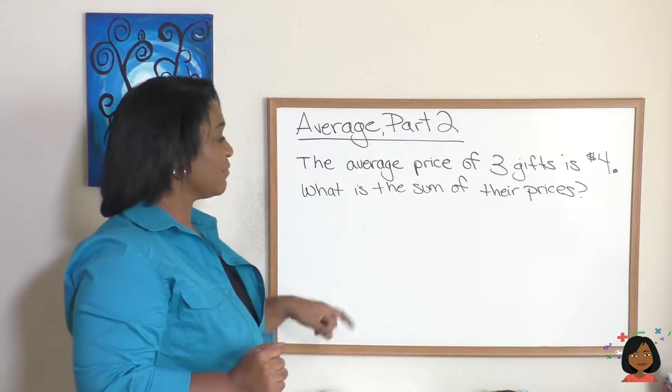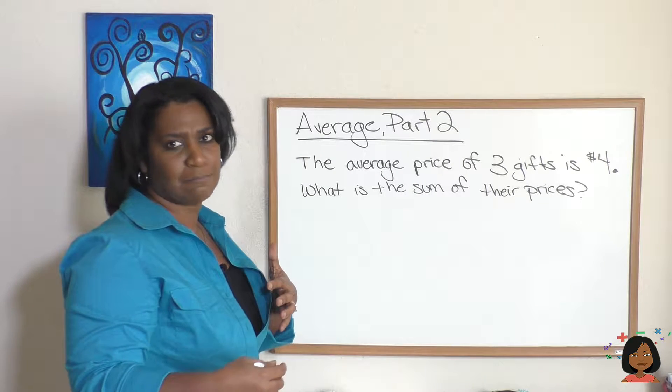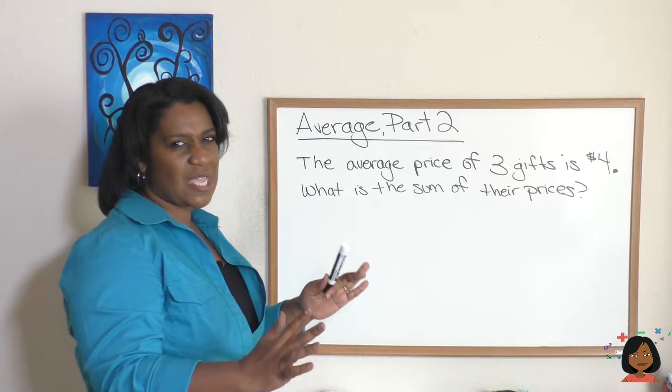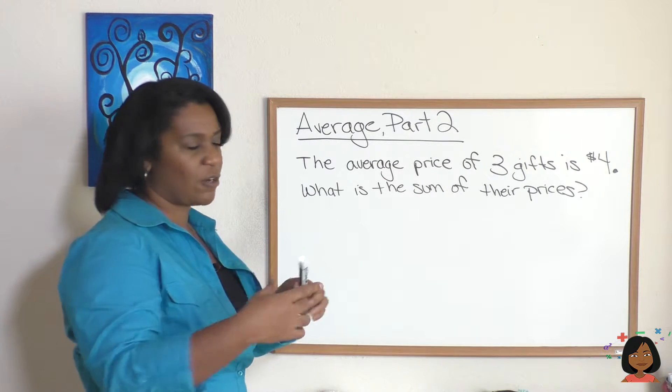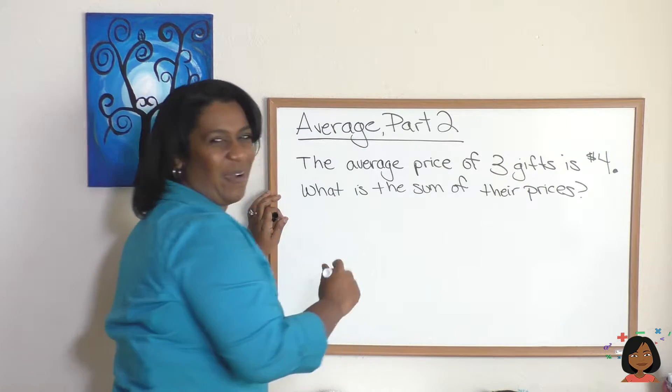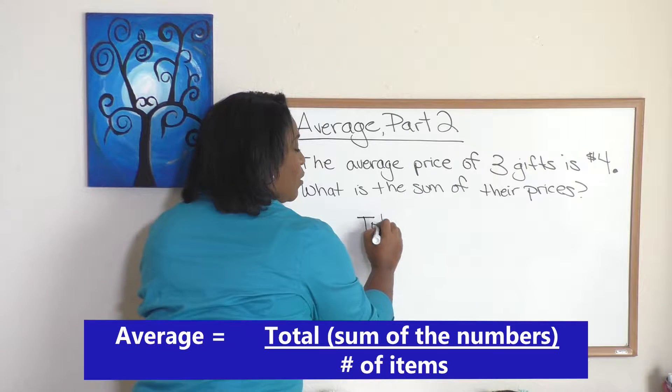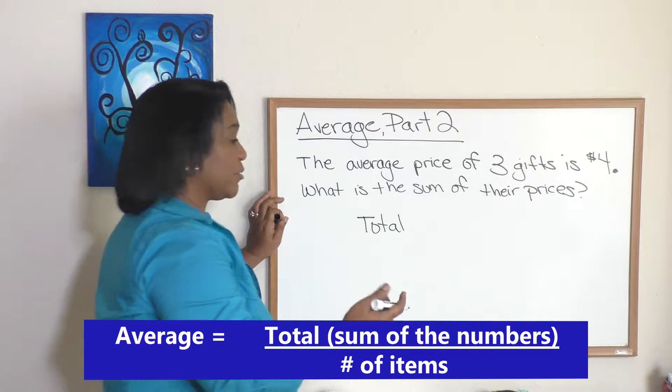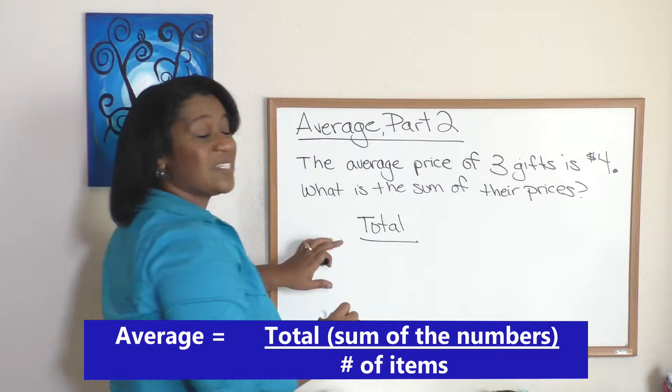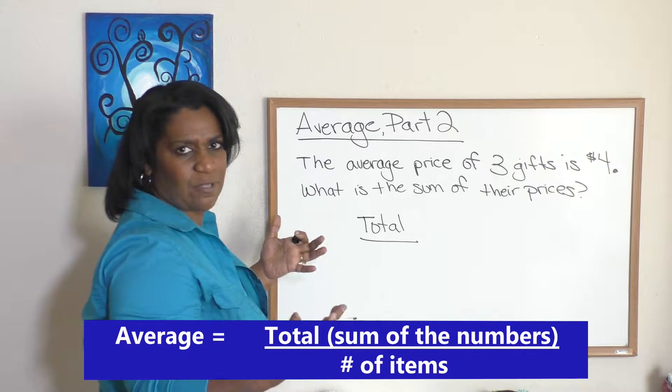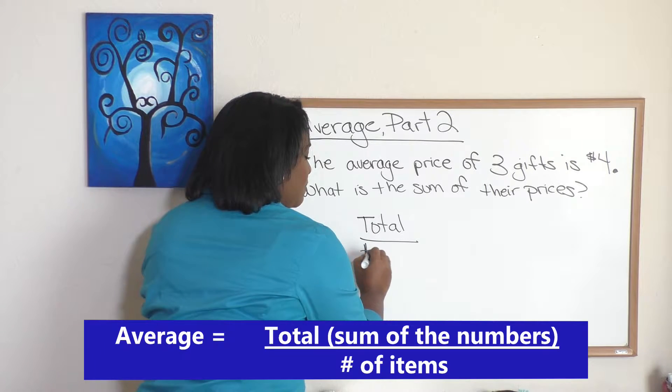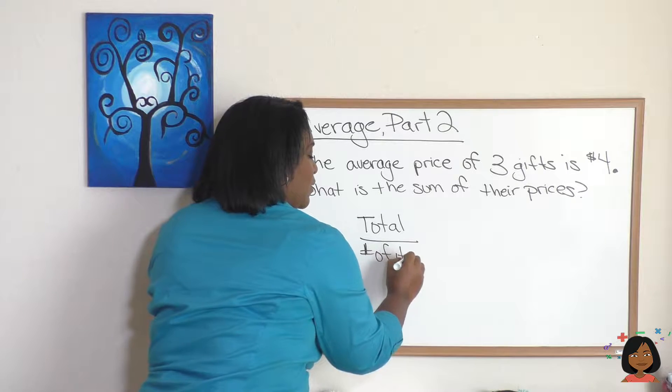The average price of three gifts is four dollars. What is the sum of their prices? Well, let's first think about what is that formula or equation for average. The formula for average is we take the total of all the numbers and then we divide it by how many numbers we have or the number of items.